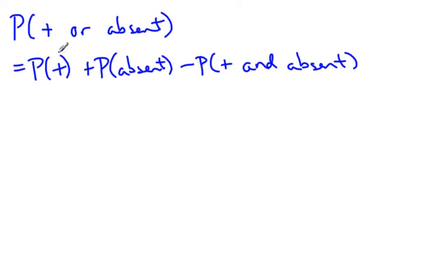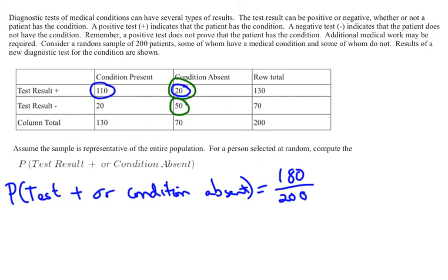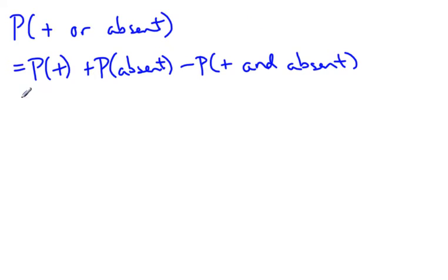So let's go look at the probability of positive. So going back to our table. We will look at just being the probability of a test result positive, which means we're looking at these 130 people. So the probability of a test result being positive is 130 out of 200.